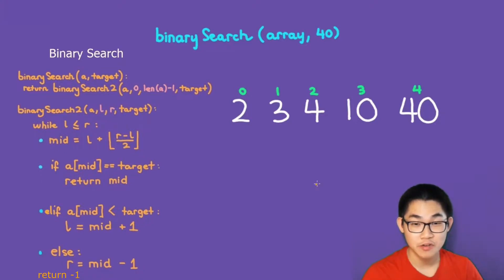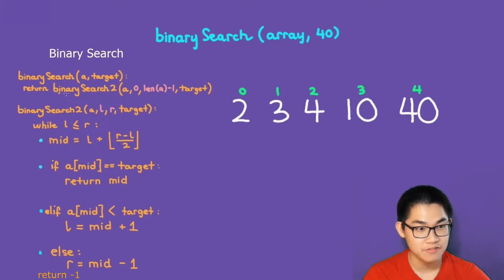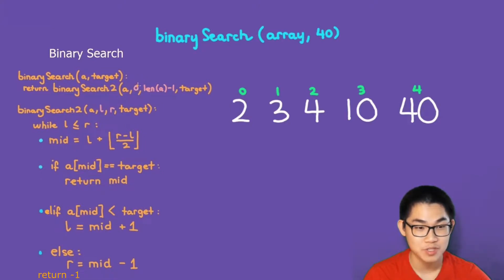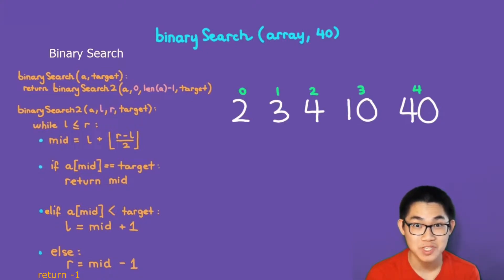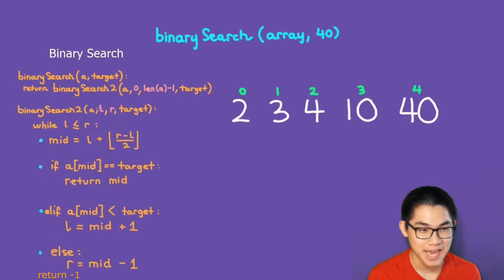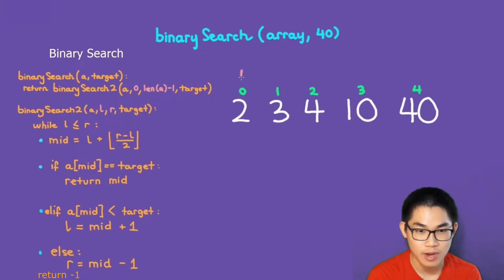Let's try searching for number 40 using binary search. This function calls binary search 2, which adds in two more parameters: 0 and length A minus 1. The first step is to pretend there are two people helping us: left and right. Left corresponds to index 0 and right corresponds to length A minus 1, the last index in the array. So left goes on the far left and right goes on the far right.